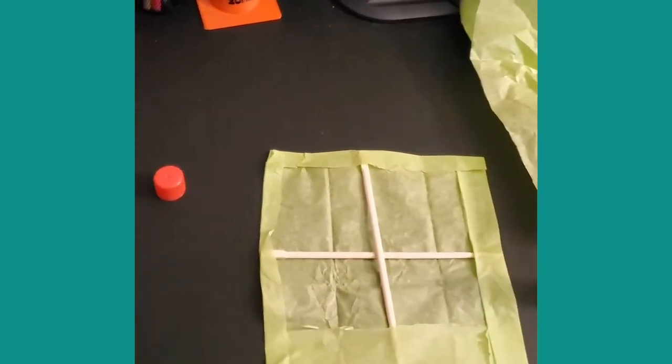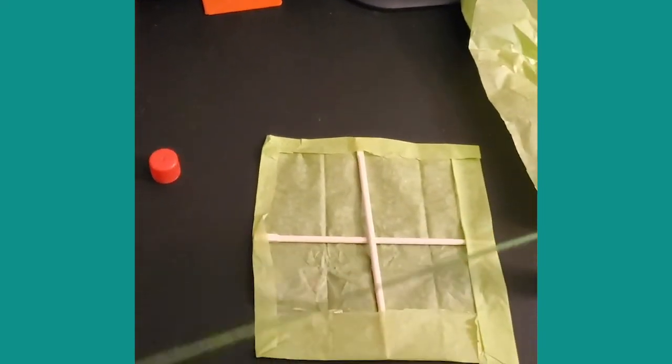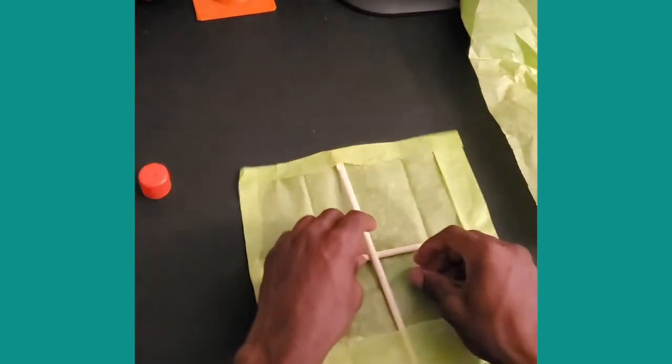Once the edges have been folded, attach the string in the middle by tying it at the intersection of the crossed sticks.